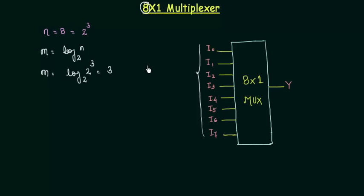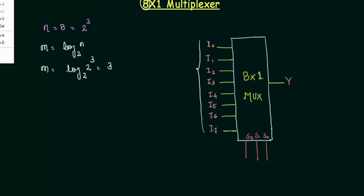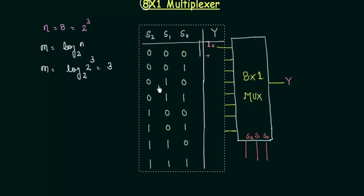So the number of select lines in 8x1 multiplexer is 3. So let's draw 3 select lines. This is your s0, this is your s1, this is your s2. Now the next step in 8x1 multiplexer is to form the table. I have already drawn the table. So let me paste it down.